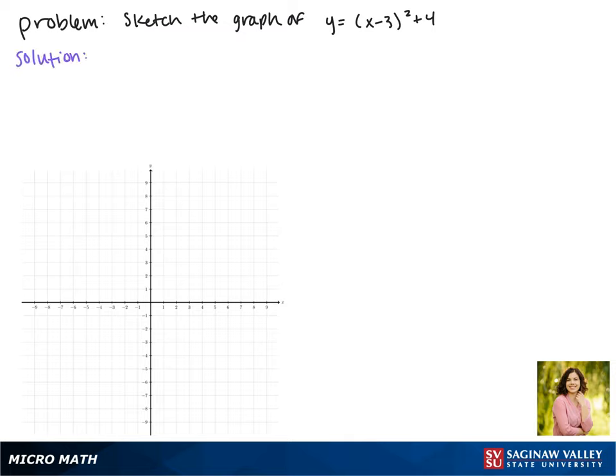We'll start by looking at the graph of the parent function, which is y equals x squared. Notice that the vertex is at 0, 0.